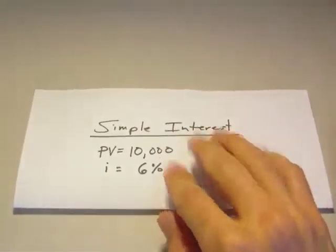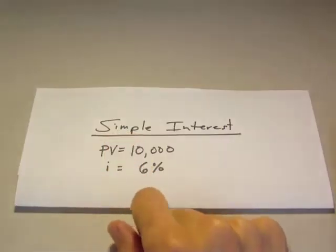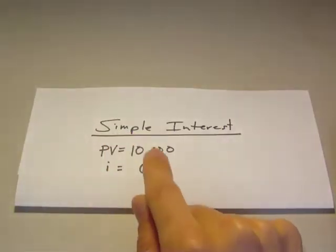We're going to start off with simple interest first. So this first problem, we've got $10,000 as our present value. Our interest rate is 6%. We want to know how much we're going to have in our account at the end of the year.